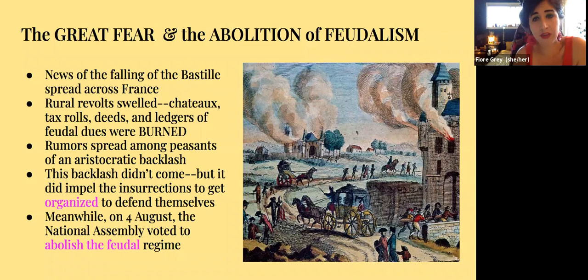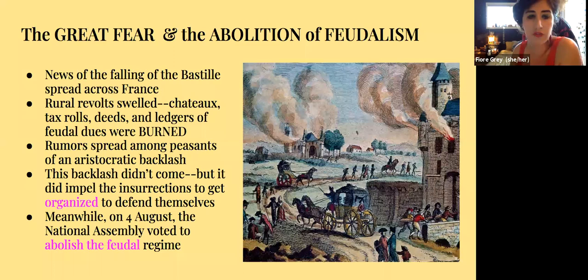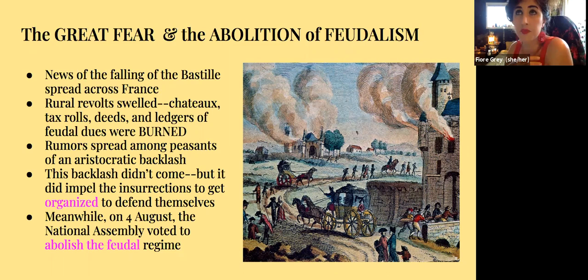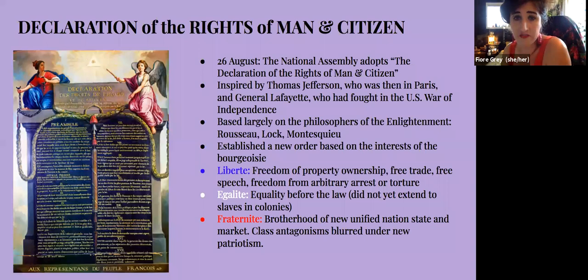News of the Bastille spread all across France, and rural revolts swelled in response. Chateaux were burned; tax rolls, deeds, and ledgers of all feudal dues were burned. Rumors spread of feared aristocratic backlash — the Great Fear — which impelled the insurrectionists to get organized and defend themselves, and that organization endured throughout the rest of the revolution. On August 4th, the National Assembly voted to abolish the feudal system.